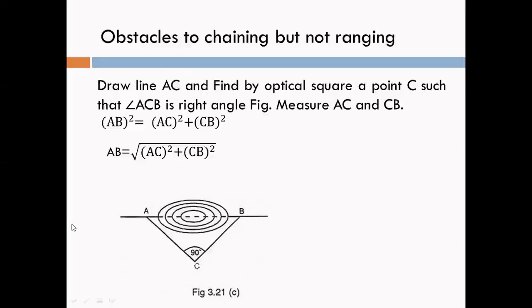Obstacles to chaining but not ranging — meaning chaining is not possible on the ground. This method is used for chaining. Consider point A and point B on the ground. A is our starting point, B is our ending point, and AB is our survey line. In between A and B there is a pond, so chaining is not possible.